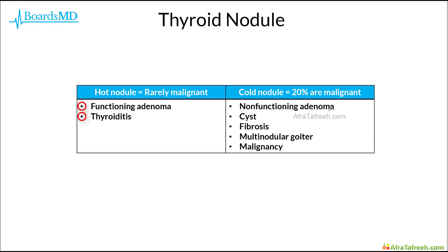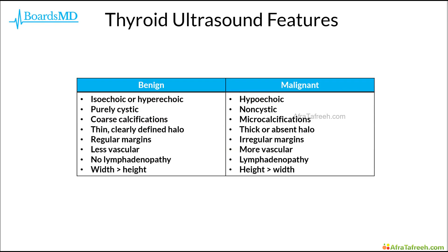Examples of cold nodules include non-functioning adenomas, cysts, fibrosis, multi-nodular goiter, and of course, malignancy. One last topic we must cover before going into our algorithm is thyroid ultrasound features.